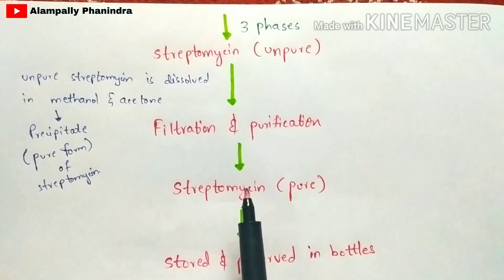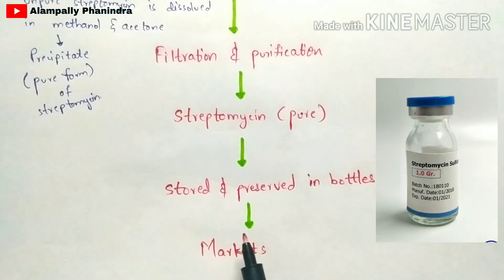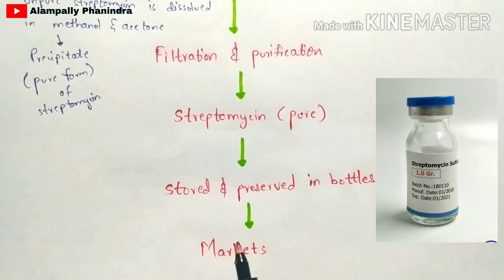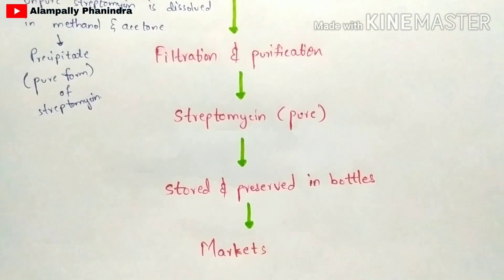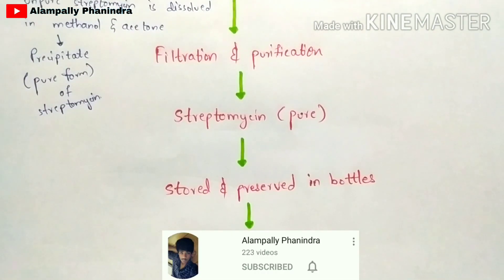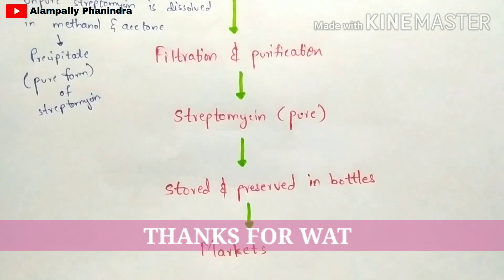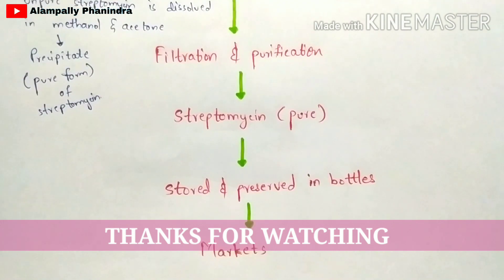The pure streptomycin is stored, preserved in bottles, and supplied to markets where it is used by doctors for curing tuberculosis in patients. If you have any doubts, comment in the comment box. Links for related videos on production of citric acid, lactic acid, glutamic acid, and aspartic acid are provided in the description box.